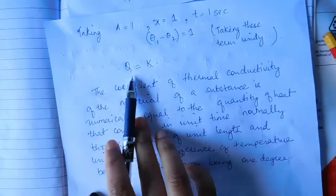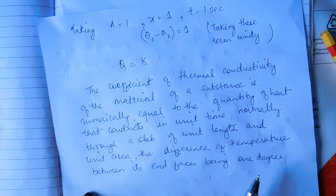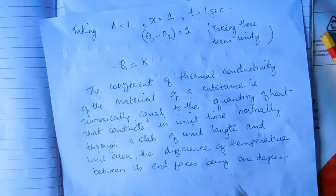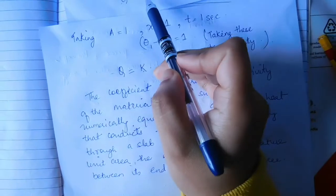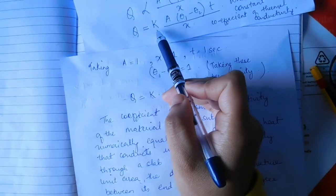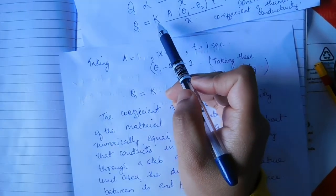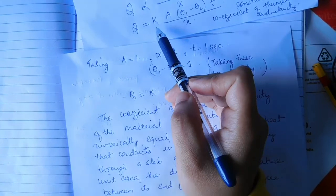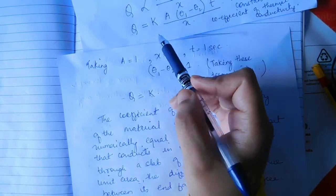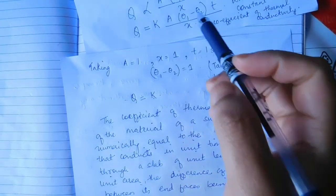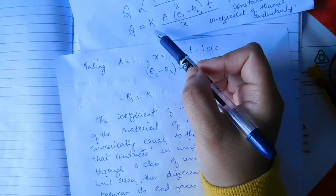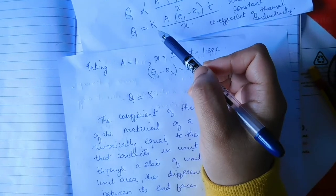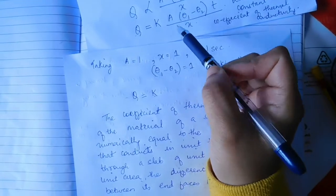The coefficient of thermal conductivity K will be different for different substances. If the value is higher, it means the substance is a good conductor. If the value is lower, it means the substance is a bad conductor.